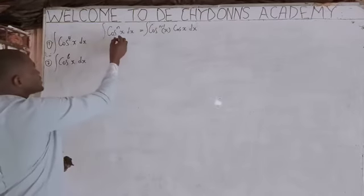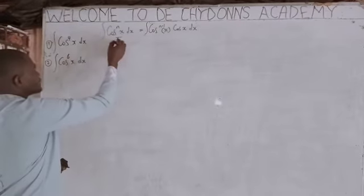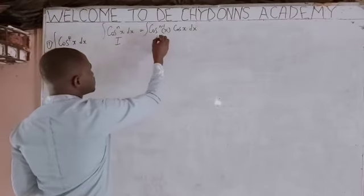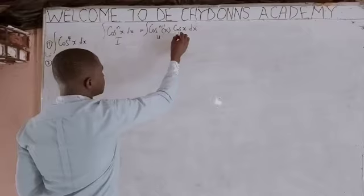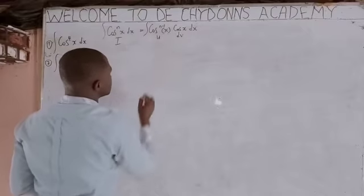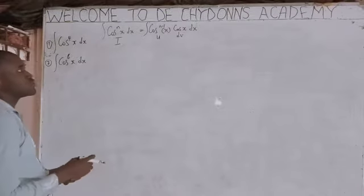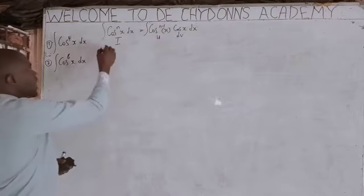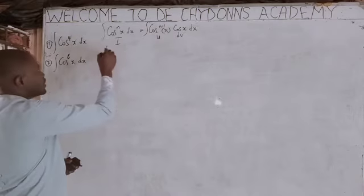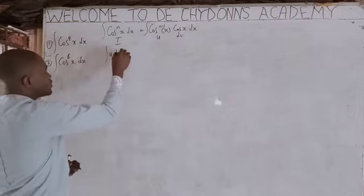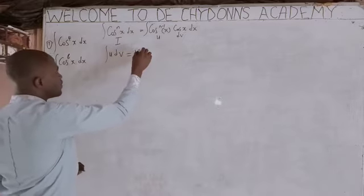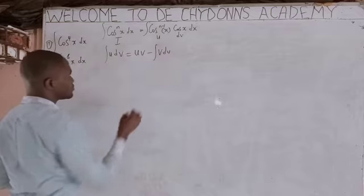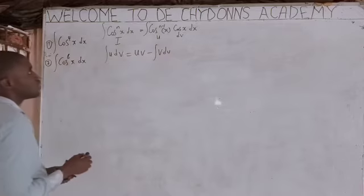We will call this integral I in this video. We will say that this is your u and this is your dv. Remember that in the product rule of integration, we have that ∫u dv equals u·v minus ∫v du.